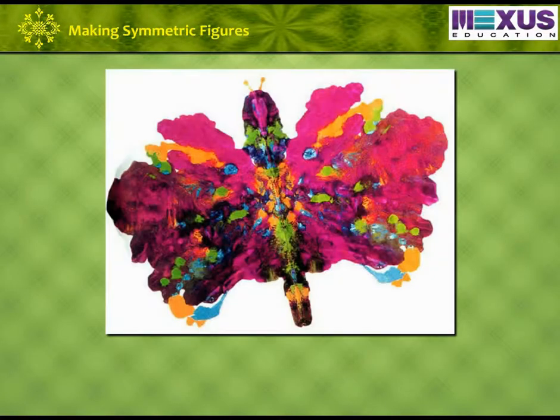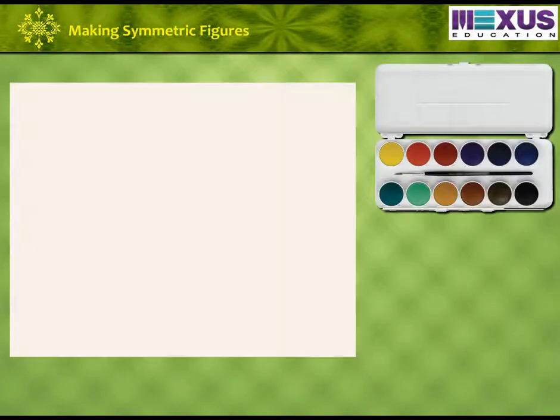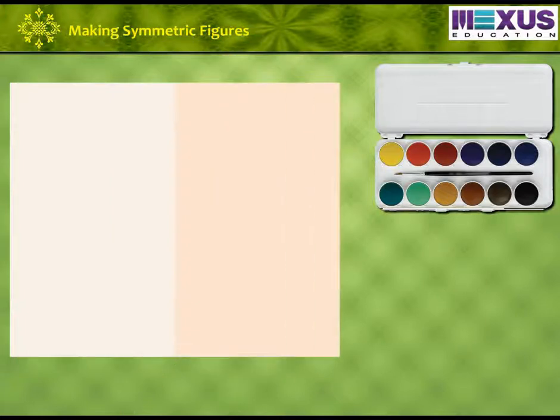Let us learn about blot painting method. Take some water color and a sheet of paper. First, fold the sheet into half so that we get a center line. Now, open it. Can you see the line in the middle? We can see that this line divides this page into two equal parts.